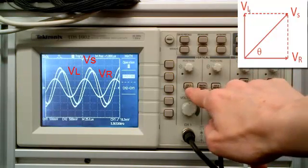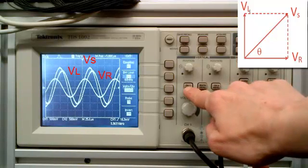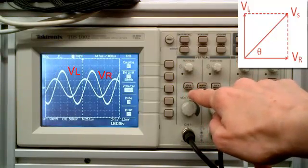When we subtract channel 1 from channel 2 we get the resistor voltage. As expected, this lags the supply voltage.